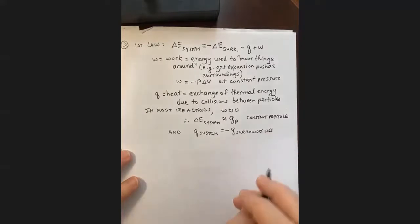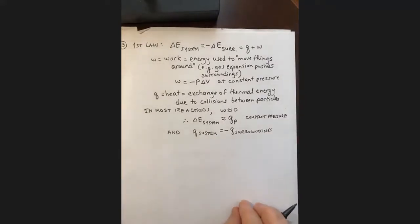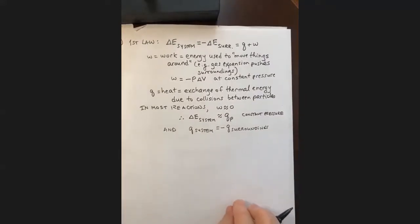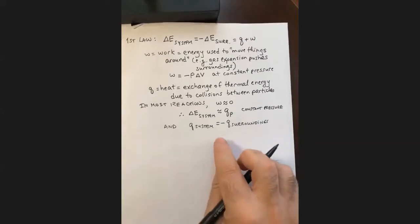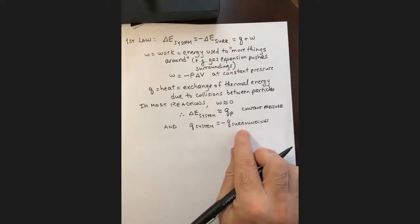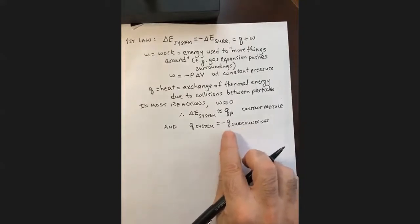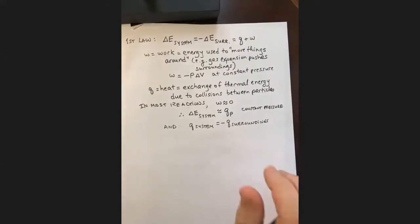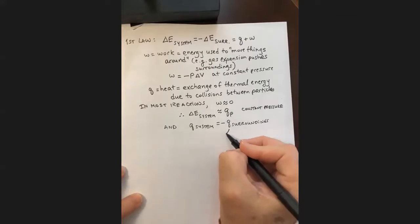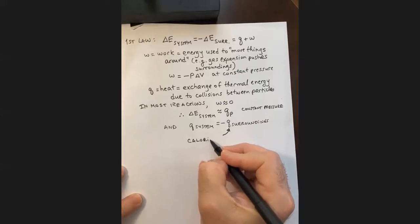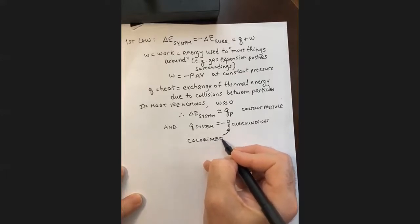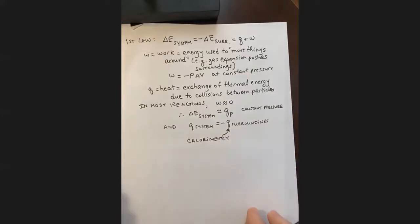As the video showed, if my system is undergoing an exothermic process — it releases heat — that heat is going to be absorbed by the surroundings in the same amount, just with opposite signs. And we have a technique called calorimetry that we're going to use to measure these heat exchanges between our system and the surroundings.